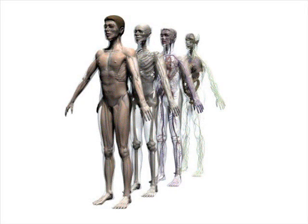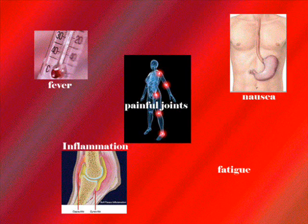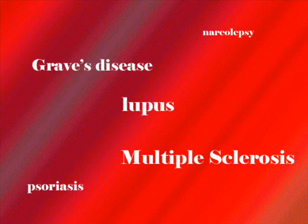Autoimmune disorders can affect any part of the body at any time with varying degrees of severity, often with destruction of tissue, changes in organs, and abnormal growth. The symptoms vary depending upon the disease, but can include painful joints, fever, inflammation, nausea, and fatigue. There are over 80 types of autoimmune diseases, including lupus, psoriasis, narcolepsy, multiple sclerosis, and Graves' disease.